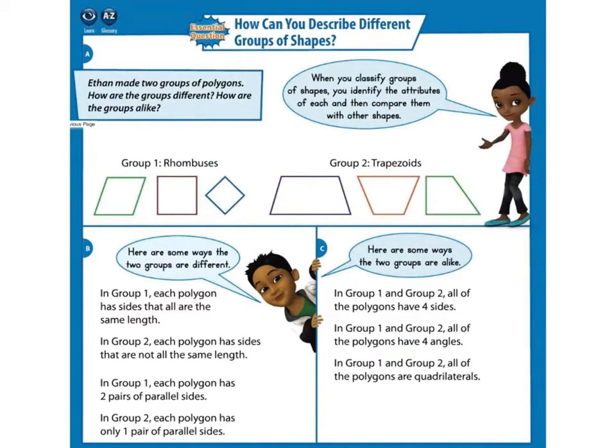Here are some ways that they are alike. In both groups, they all have four sides. In both groups, they all have four angles. And in both groups, they are all polygons and are all quadrilaterals.